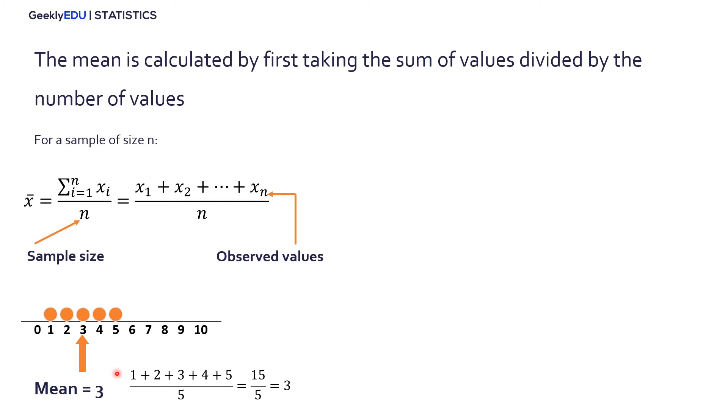So do outliers affect the mean? What happens if I take this 1 and I drag it and I make it more negative? Or I take this 5 and I drag it and I make it more positive? Is the mean going to change and in which direction will it go? Well, we're going to find out right now in our next example.